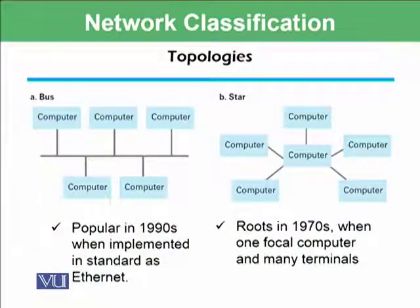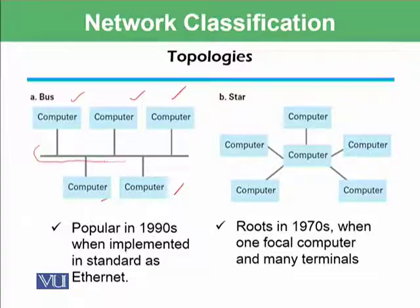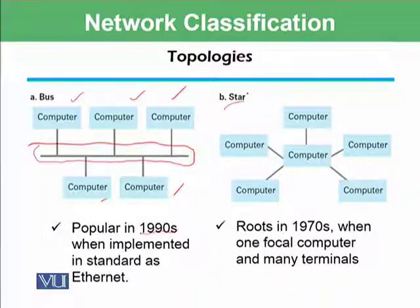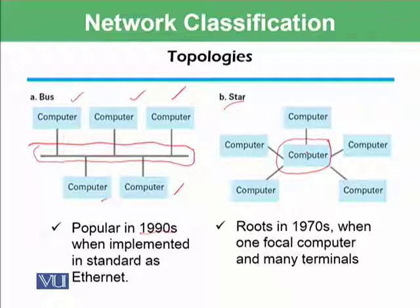Here is a visualization of these topologies. In bus topology, multiple computers are connected through one single line, and this was popular in the 1990s when implemented in the Ethernet standard. In star topology, there is a main computer — perhaps a server or focal point — and all other computers are connected to this access point. Star topology has roots in the 1970s when one focal computer and many terminals were available.